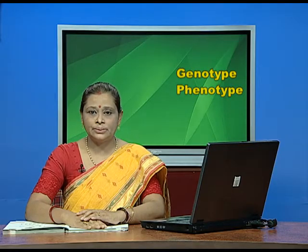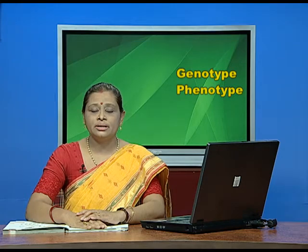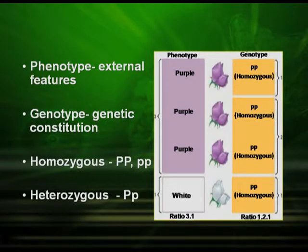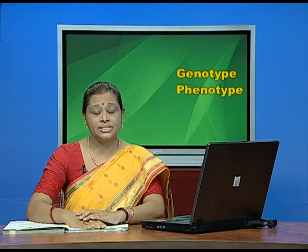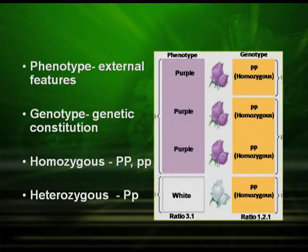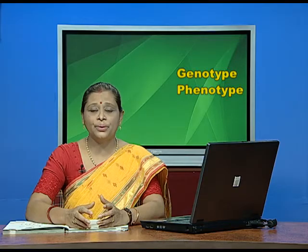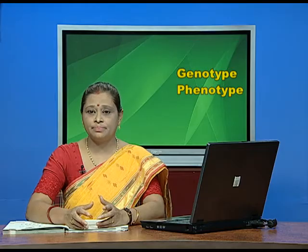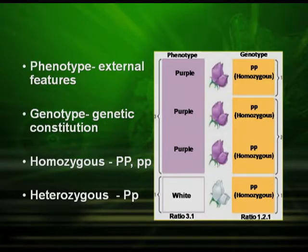The phenotype refers to the external features of an organism — for example, whether a plant is tall or dwarf. The genotype is the genetic constitution of an organism. The genotype can be homozygous, meaning both alleles of the gene are of the same type — such as PP or pp. In the heterozygous condition, the alleles are of two different types, denoted as Pp.